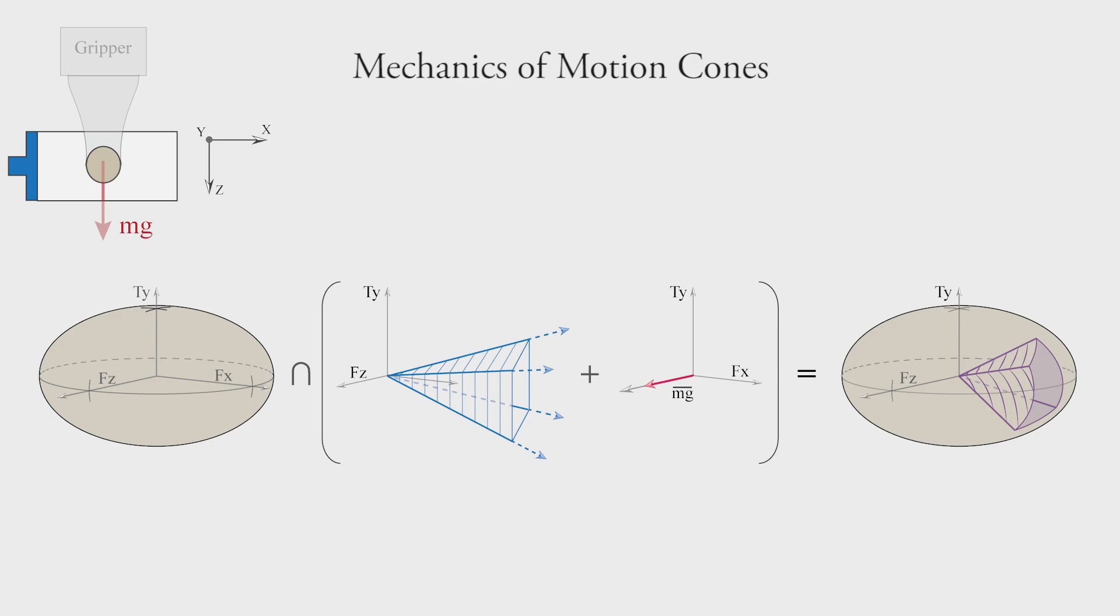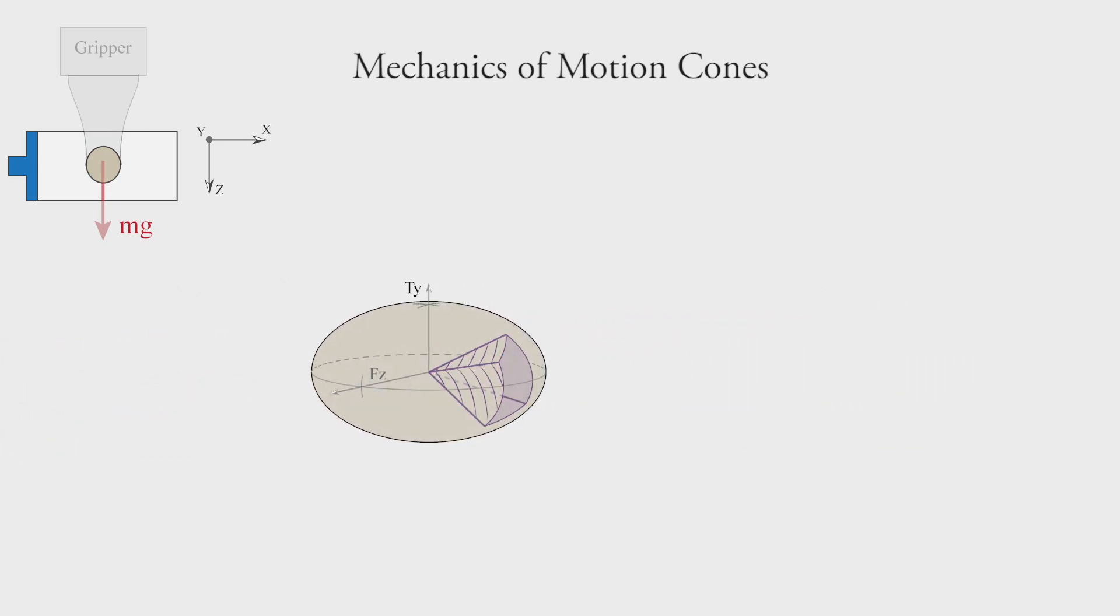When the combination of the set of all possible wrenches from the pusher and the gravitational wrench intersect the boundary of the limit surface, it defines the set of finger wrenches for possible object motions. The normal to the limit surface at this intersection provides the set of motions that the pusher can induce on the object. This set is a cone defined by low curvature surfaces and this is the motion cone.